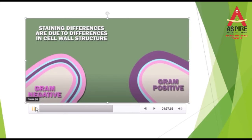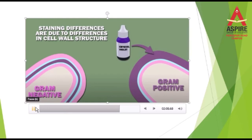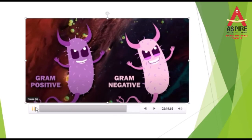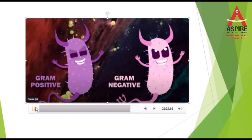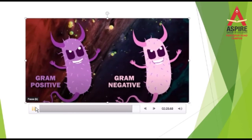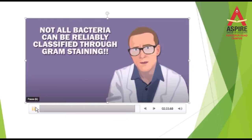Gram-positive bacteria have a thick peptidoglycan layer and they retain the crystal violet dye. Gram-negative bacteria have an outer membrane which gets in the way of the crystal violet and they lose the stain. Although both gram-positive and gram-negative bacteria exist, gram-negative bacteria are more resistant to antibiotics because of their less permeable cell walls. Unfortunately, these bacteria also develop resistance more quickly.